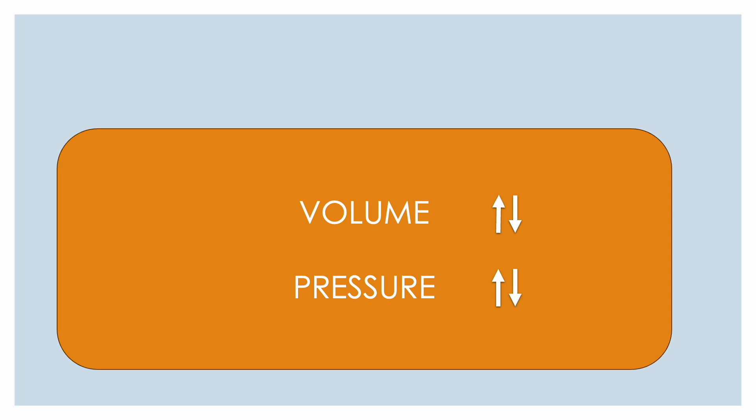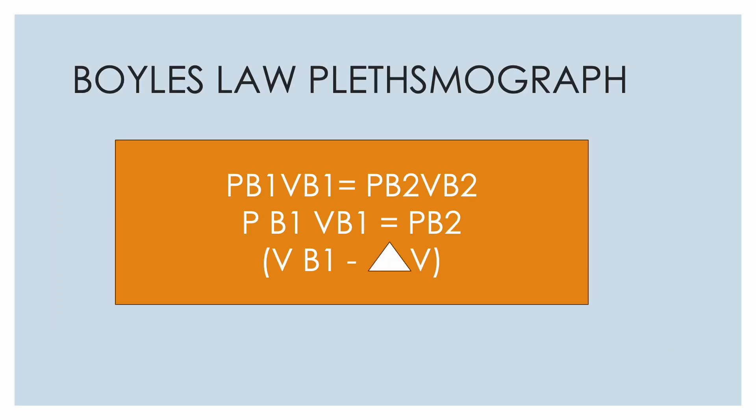So any increase in lung volume will have a decrease in the plethysmograph volume. So ultimately the pressure and the volume will stay constant in this system. So to determine what is the volume that was in the lung we can measure the change in the volume and then we can determine that from the total.